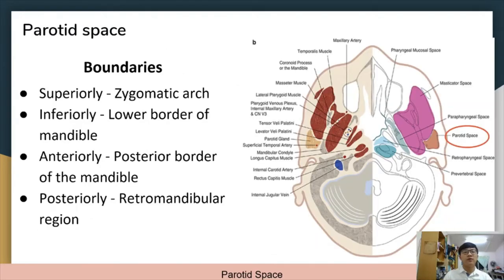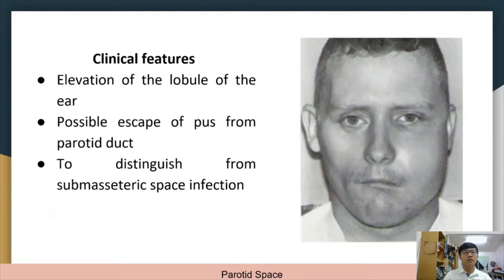The parotid space is bounded superiorly by the zygomatic arch, inferiorly by the lower border of the mandible, anteriorly by the posterior border of the mandible, and posteriorly by the retromandibular region. Primary infection of the parotid space can break into the lateral pharyngeal space readily, as the fascia is thin over the deep portion. Spread superiorly to the temporal fossa may also occur. Clinical features are elevation of the lobule of the ear and possible escape of pus from the parotid duct when the duct is milked. These features distinguish it from the submasseteric space infection, which will be presented next.